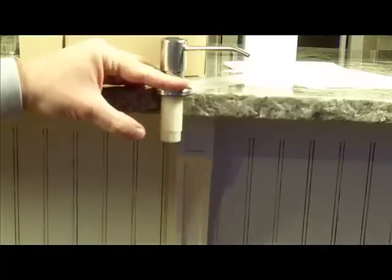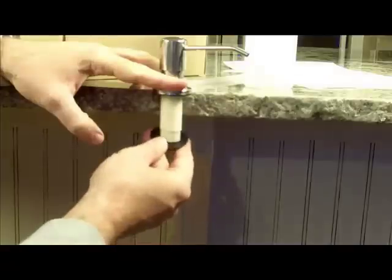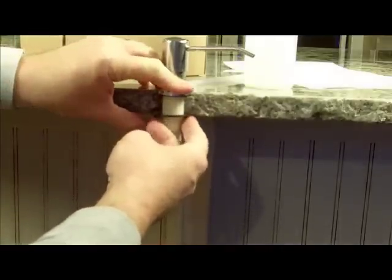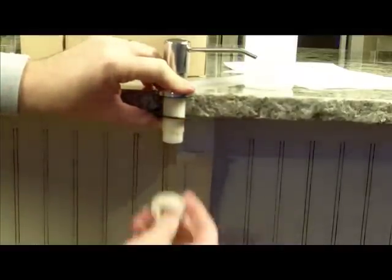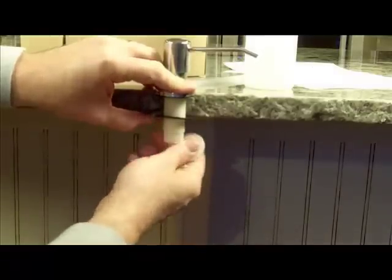Once you've stuck the plastic housing through the countertop hole, you go under the sink and you put the second washer up through the tube and then take the flat part of the lock nut and simply screw it on.